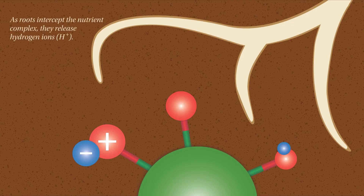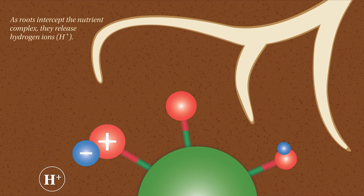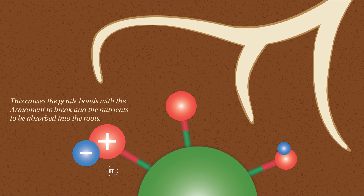As roots intercept the nutrient cluster, they release hydrogen ions. This causes the bonds between armament and cations to break, and the nutrients to be taken up into the plant.